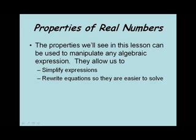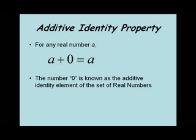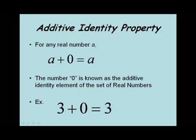The first property we'll talk about is the additive identity property. This says for any real number a, a plus 0 equals a. The number 0 is known as the additive identity element of the set of real numbers. For example, 3 plus 0 equals 3.